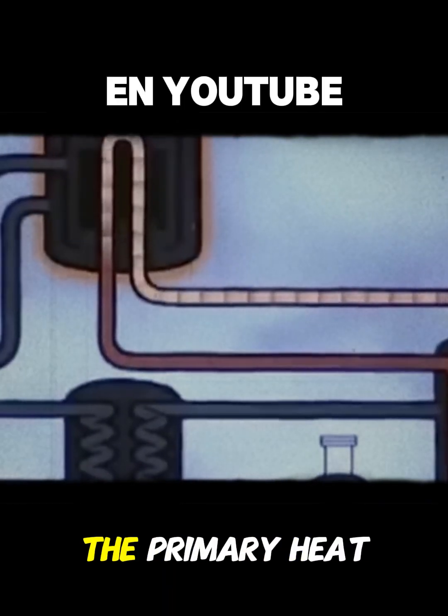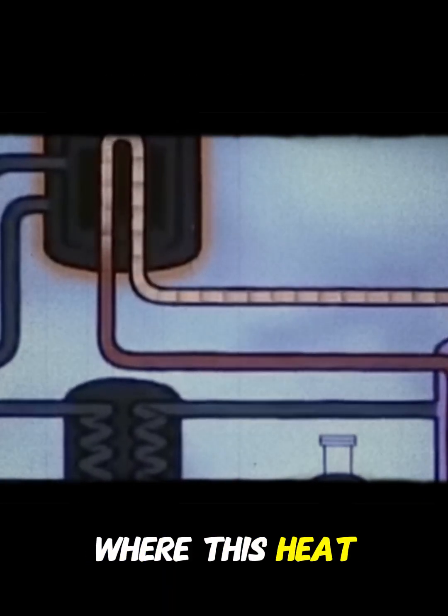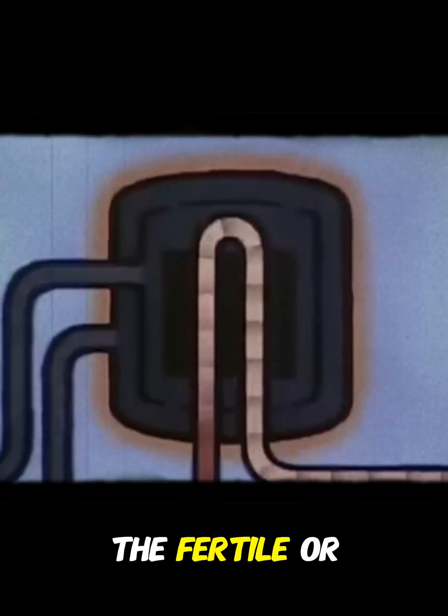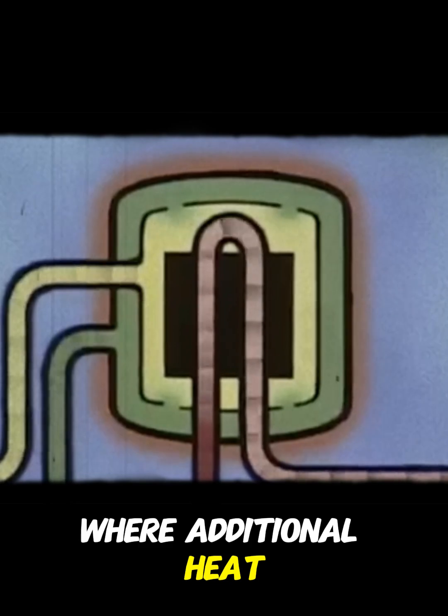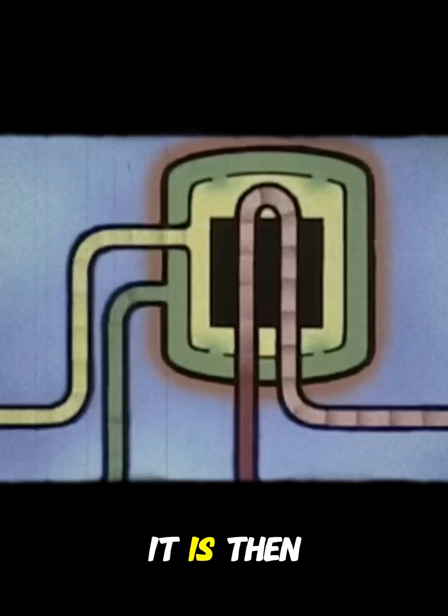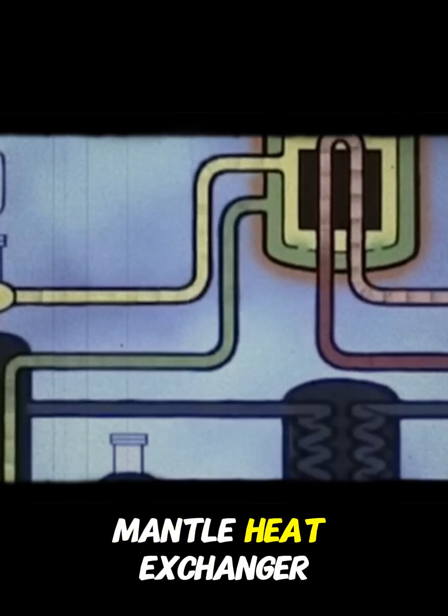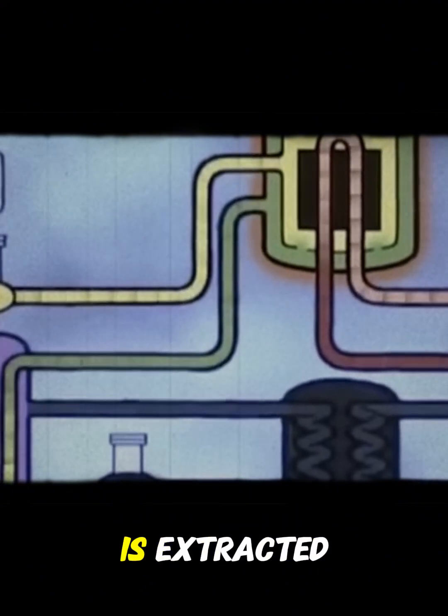The fuel then flows through the primary heat exchanger where this heat is extracted. The fertile or mantle salt surrounds the core where additional heat is generated. It is then pumped through the mantle heat exchanger where this heat is extracted.